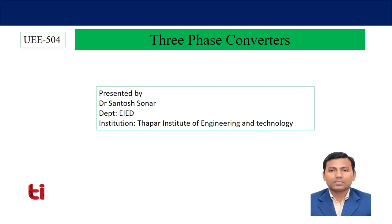In the last class, I discussed the three-phase half-wave controlled converter, where every thyristor conducts for 120 degrees and three pulses are obtained in one complete cycle. Today I will discuss the three-phase six-pulse converter.